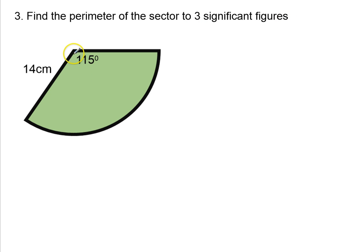Okay, so our sector is a part of a circle. We're given the radius over here is 14 cm, and the angle that our sector is making is 115 degrees.